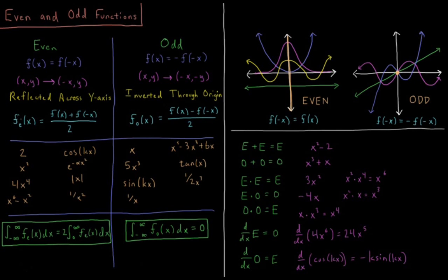To get the even component of a function, fe(x), you take [f(x) + f(-x)]/2. So if fe(x), the even component of the function, equals the entire function, then the function is said to be even.